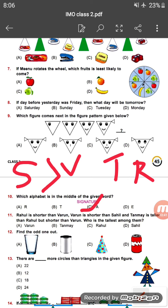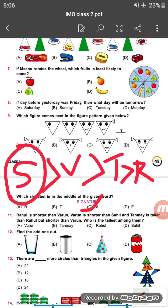Varun is taller than Rahul and Tanma, but shorter than Sahil. According to this information, Sahil is the tallest.